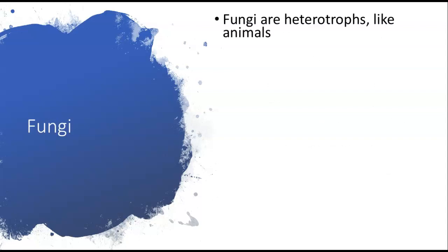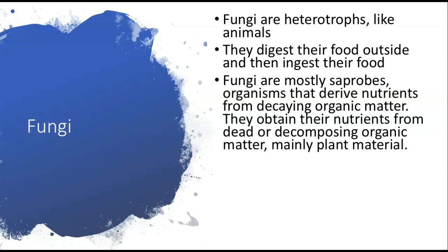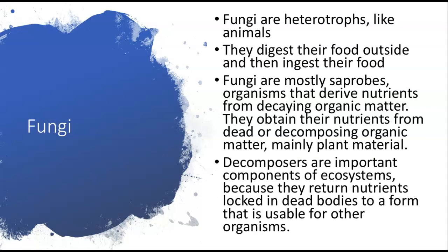Fungi are heterotrophs, like animals. That means they do not produce their own food — they have to get it from an outside source. They digest their food outside of the body and then ingest the digested food. They are mostly saprobes, organisms that derive nutrients from decaying organic matter. They obtain their nutrients from dead or decomposing organic matter, mainly plant material. Decomposers return nutrients locked inside dead bodies to a form that is usable for other organisms.